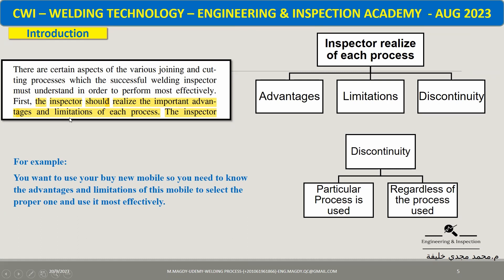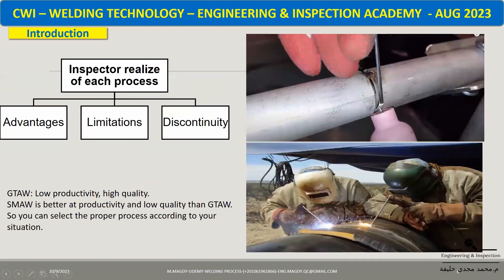First, the inspector should realize the important advantages and limitations of each process. For example, when you want to buy a new mobile, you need to know the advantages and limitations of each model to select the proper one. Same in welding — to select the proper welding process, you should know the advantages and limitations of each process, as well as the welding discontinuities that result from each process.